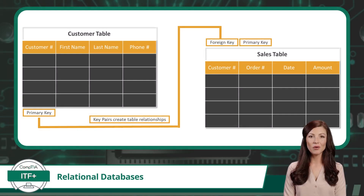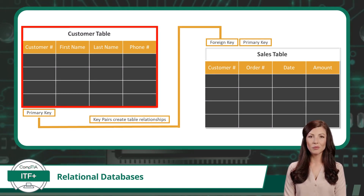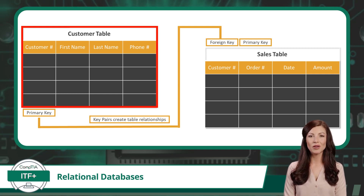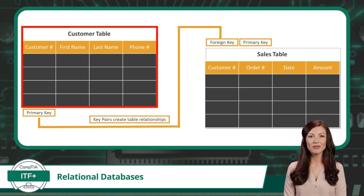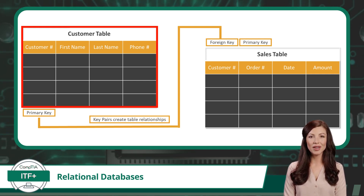So how are these table relationships formed? In the example behind me, we have a customer table where we can store information about customers, like their first name, last name, and phone number. This table helps us keep all our customer information organized.